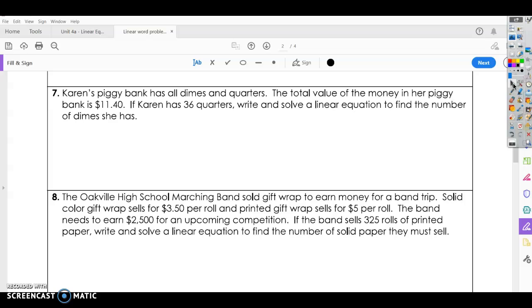Alright, the next question. Karen's piggy bank has all dimes and quarters. The total value of the money in her piggy bank is $11.40. If Karen has 36 quarters, write and solve a linear equation to find the number of dimes she has.